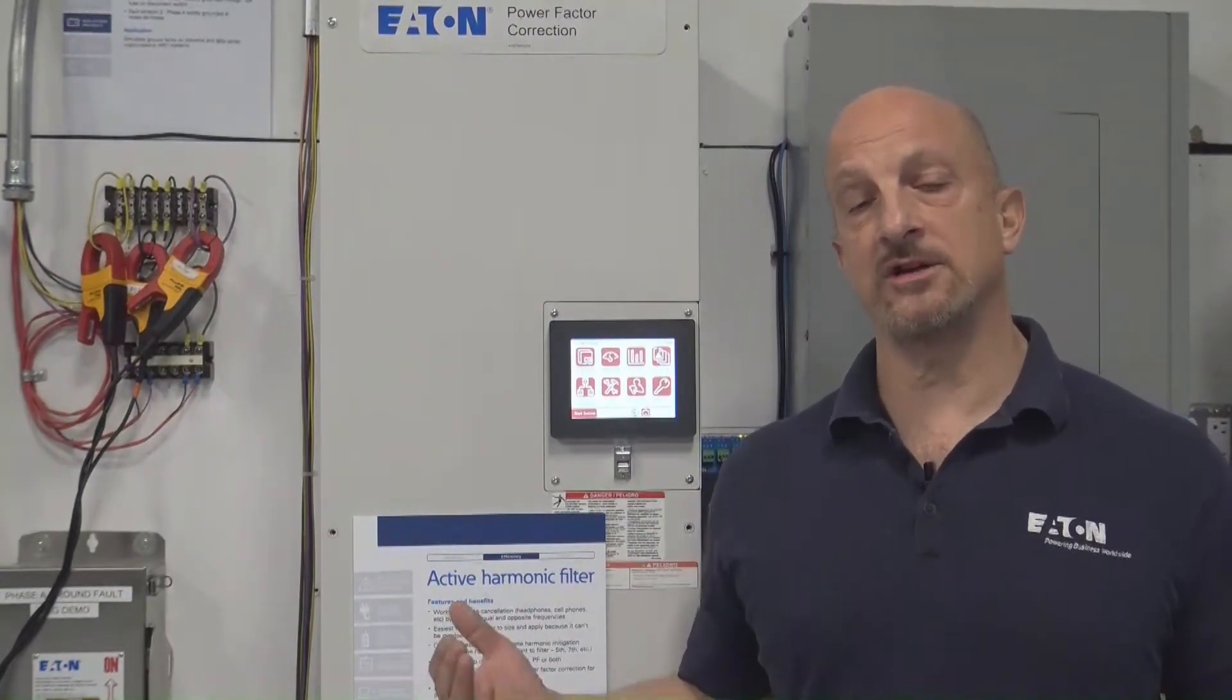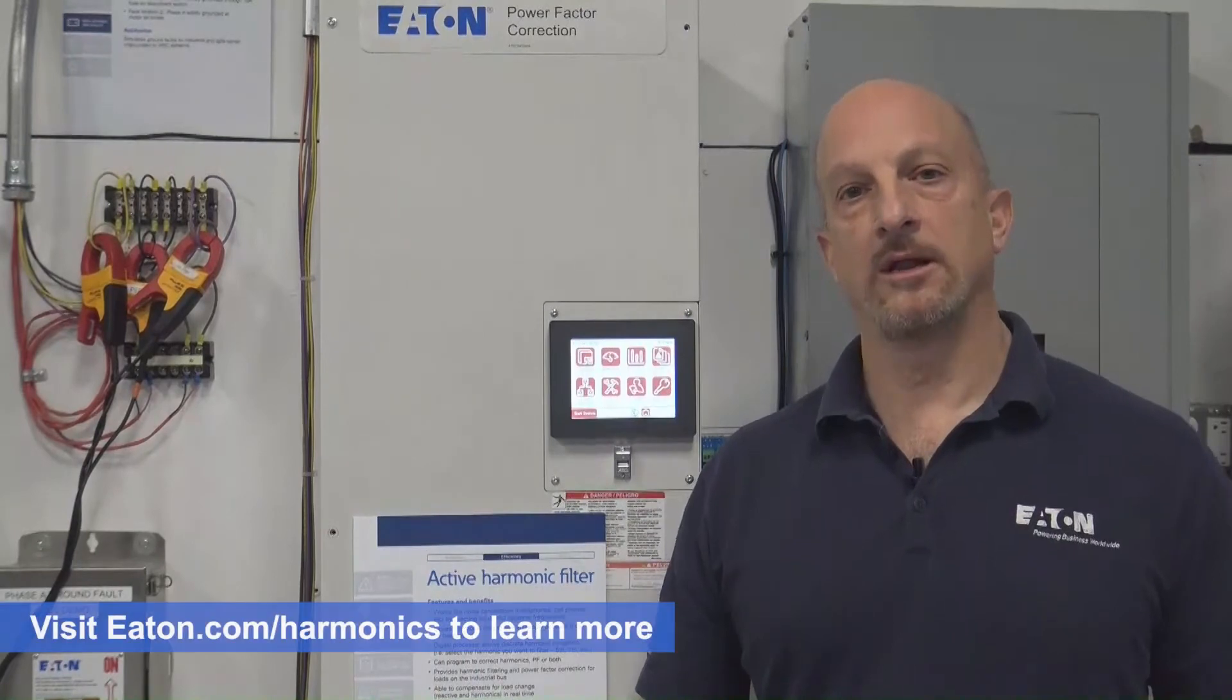They typically come in 50 or 60, 100, 200 amp, 300 amp units, and then you can parallel them. The other nice thing about these is you can't overload them because once they stop putting out the amount of harmonic current that they can put out or the power factor correction they put out, they stop producing at that level, whether it's 100 amps or 120 amps or whatever the case may be.